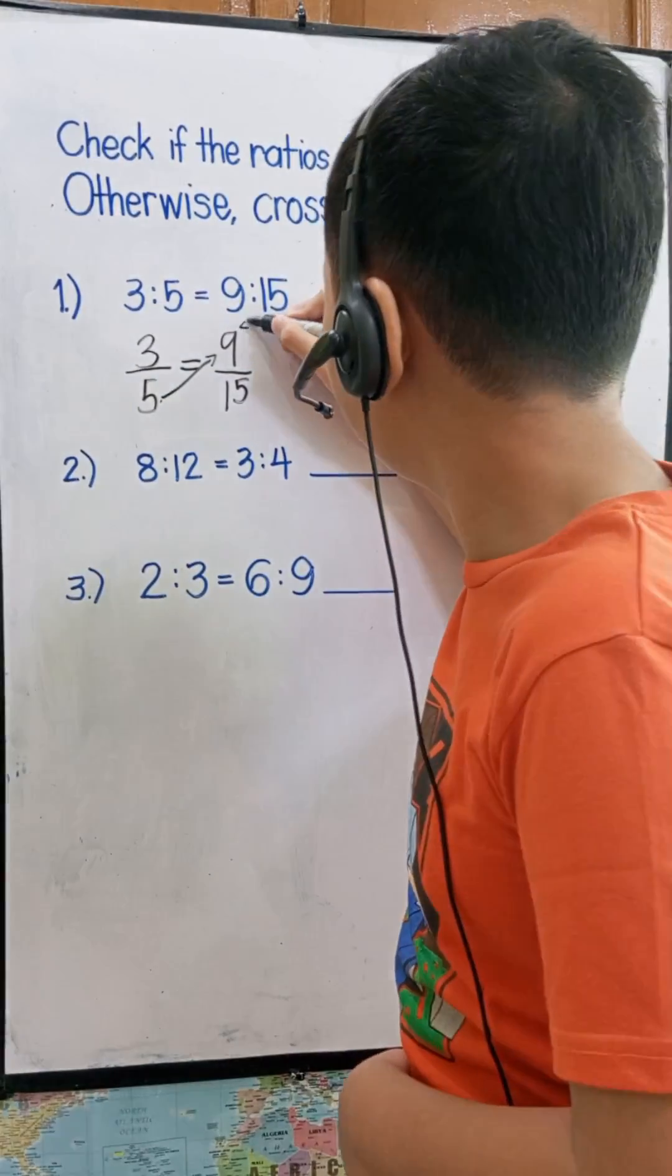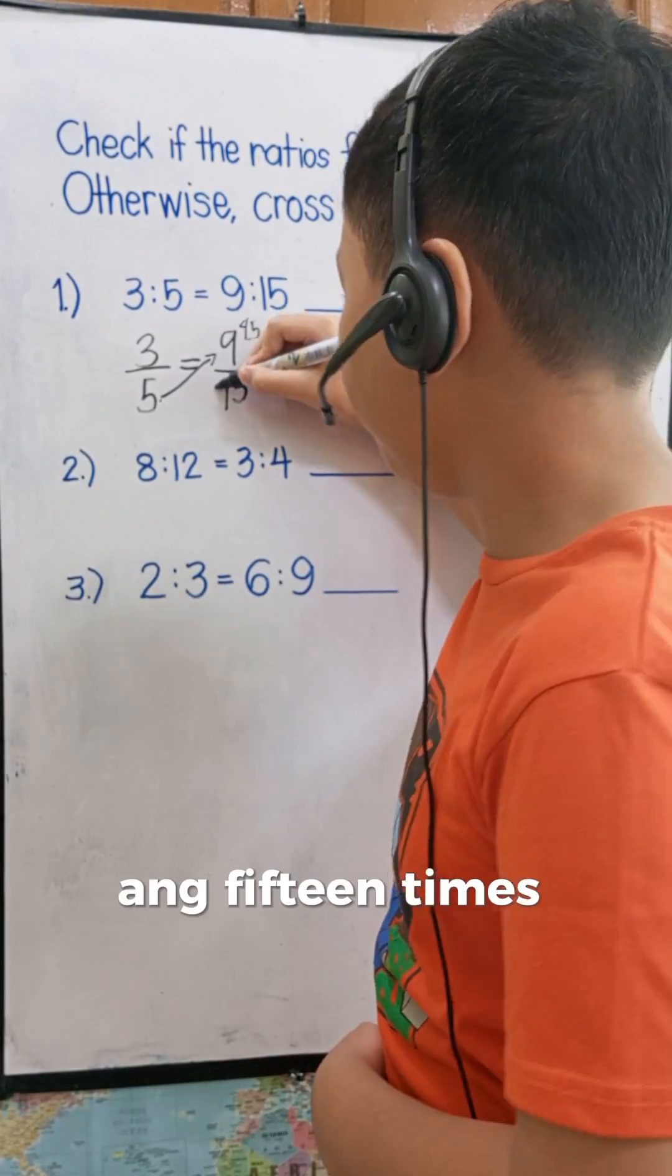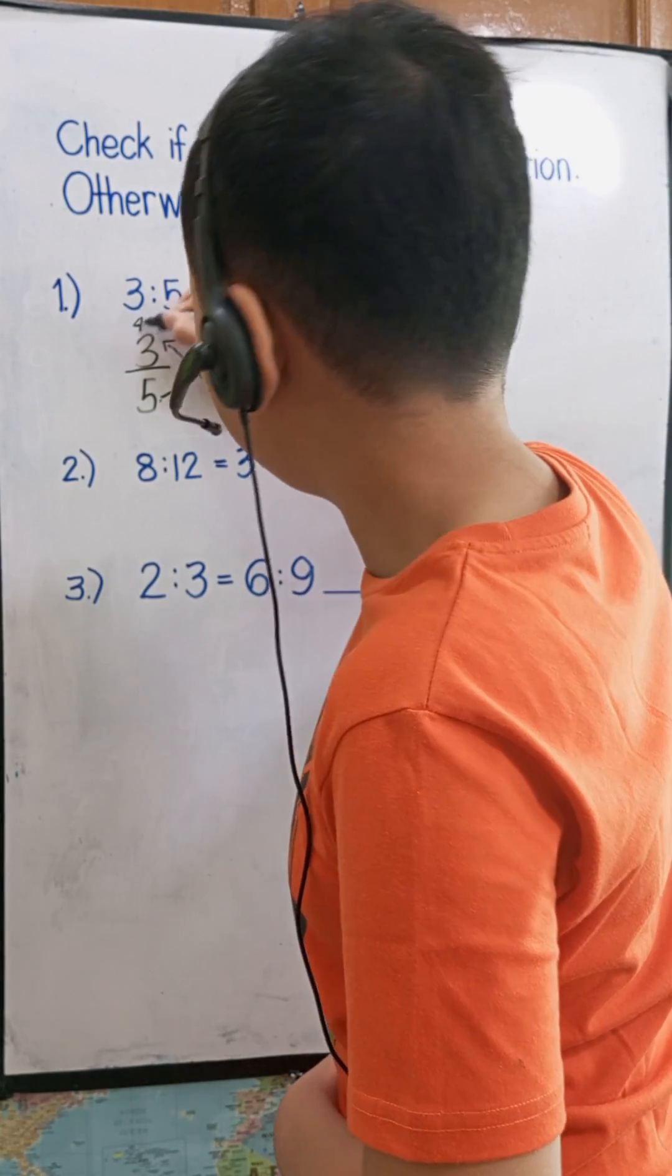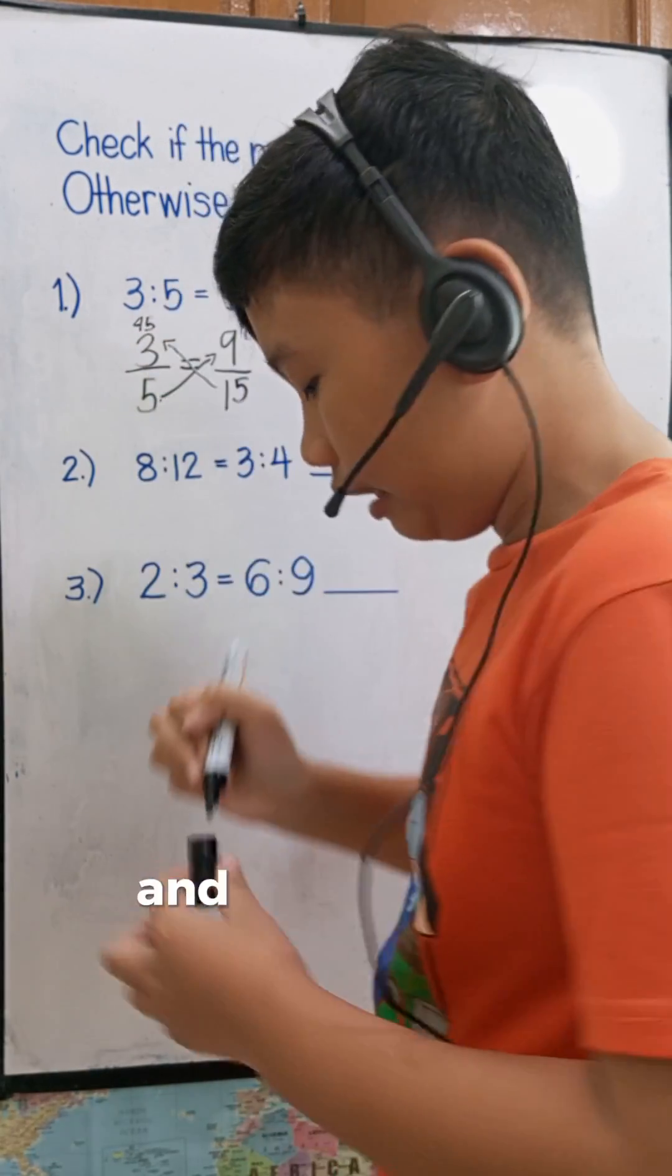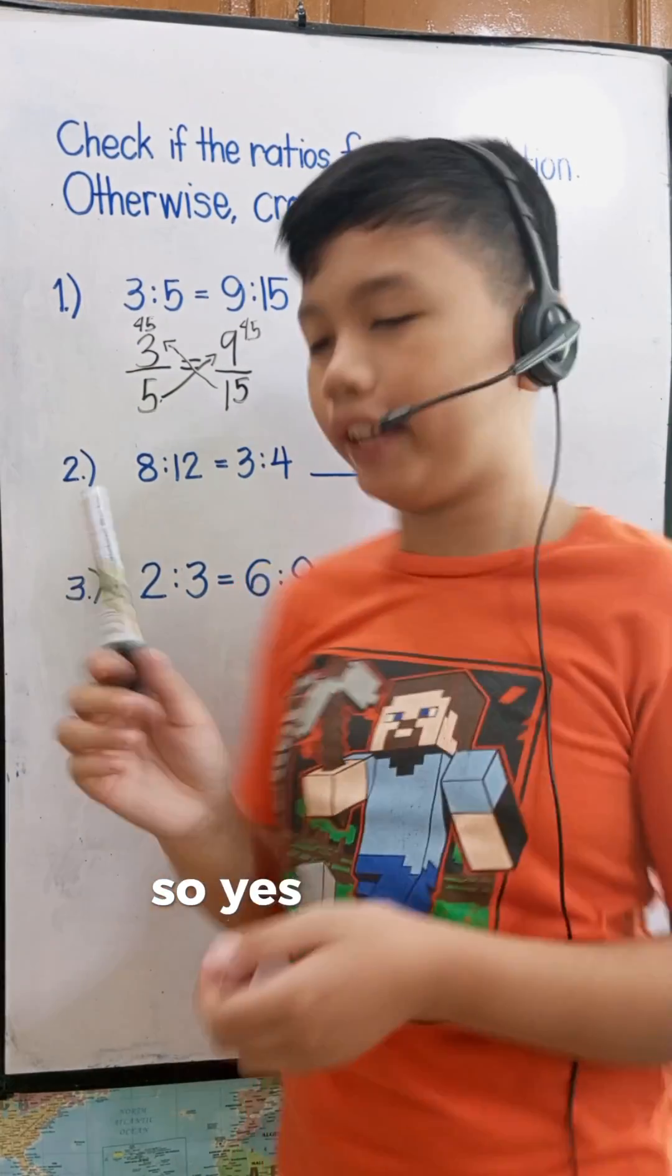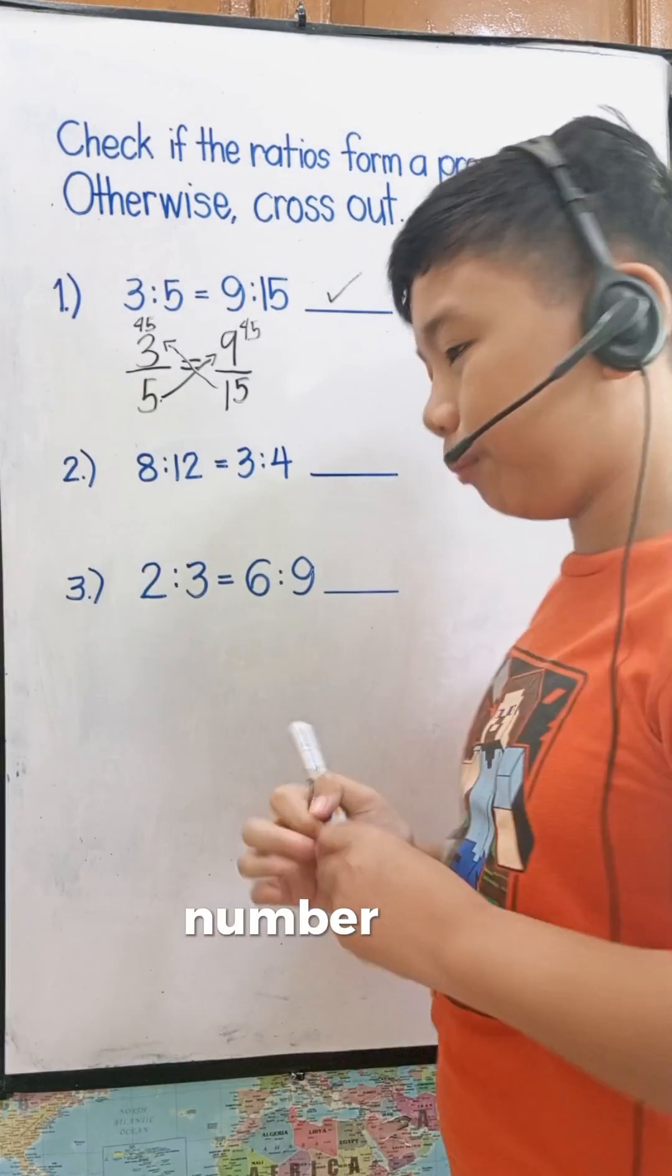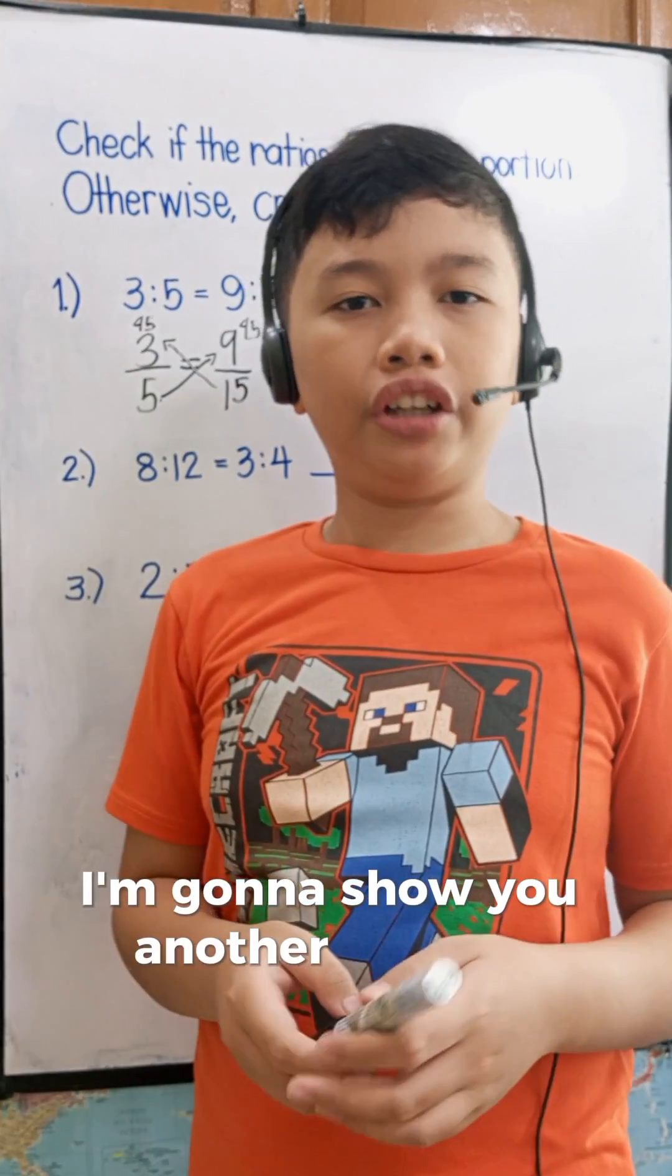So five times nine equals 45, and 15 times 3 is 45. And 45 is equal to 45, so yes this is a proportion.